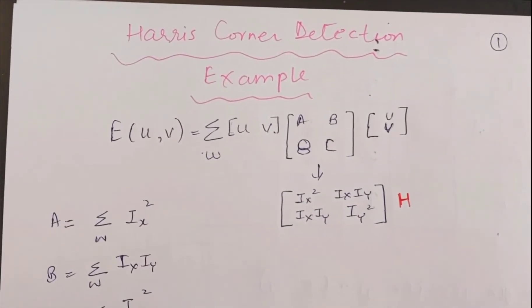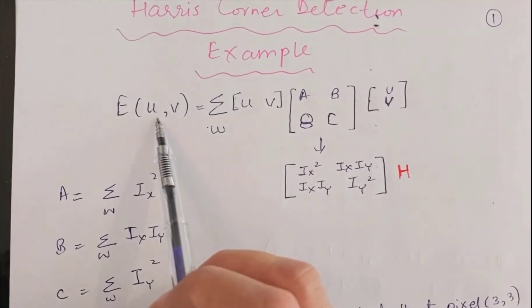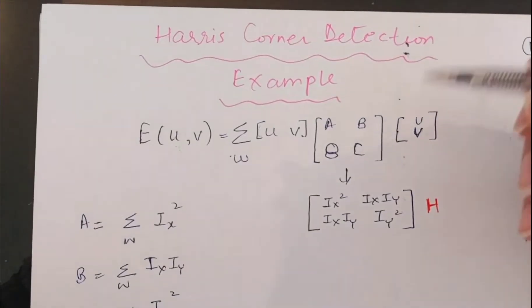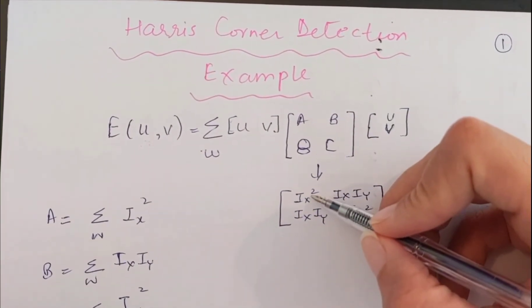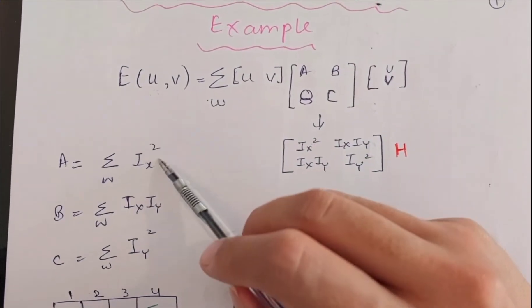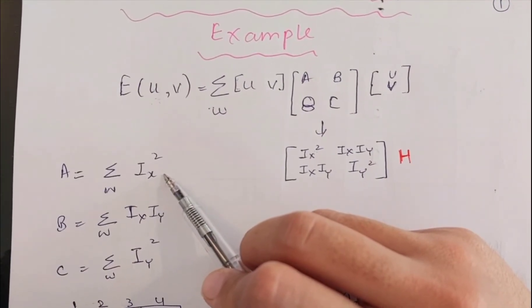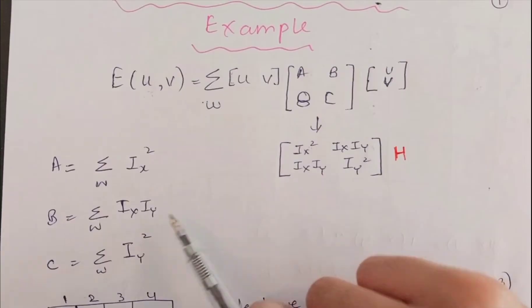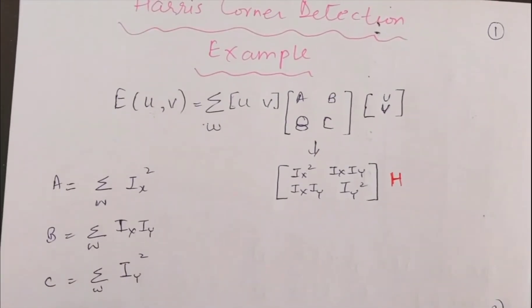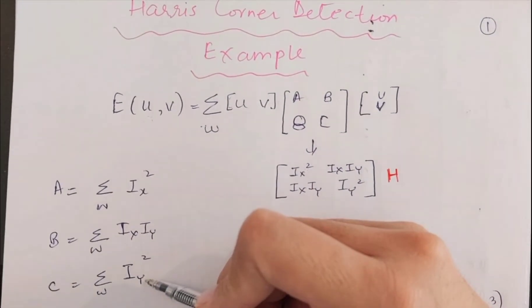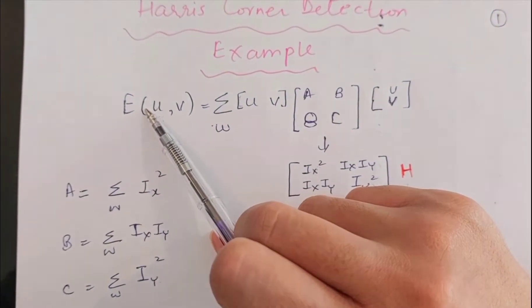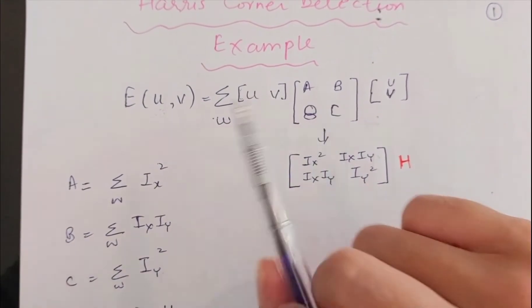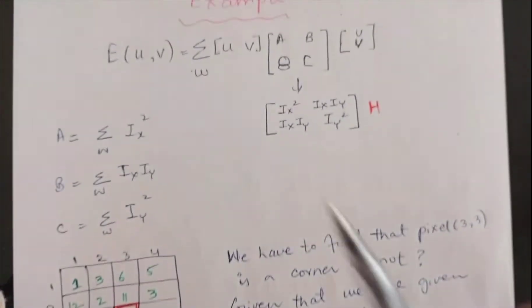Now we are going to solve an example to further understand the concept. We have this error equation, which we want to be large if it is a corner. The error equation depends on a matrix where A represents the summation of Ix squared (the gradient along the x-axis), B is the summation of Ix multiplied with Iy, and C is the summation of Iy squared (the gradient along the y-axis). So to find a corner, we find this error, and to find this error we need this matrix, which requires finding these gradients first.